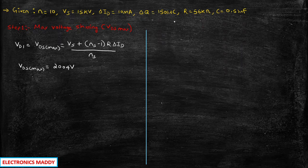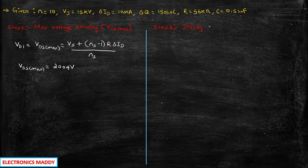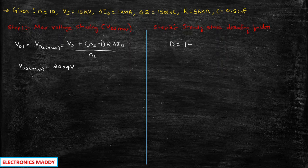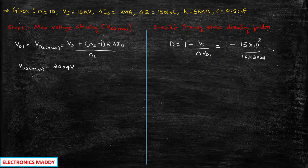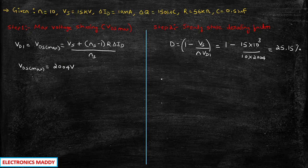Step two is to find the steady state derating factor. The standard formula is: D equals 1 minus Vs whole divided by N into Vd1. Substituting Vs equals 15 kV, N equals 10, and Vd1 equals 2004, and multiplying into 100, you will be getting the value equal to 25.15 percent.